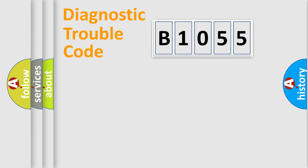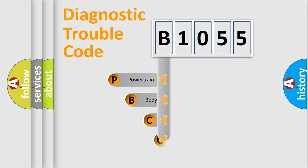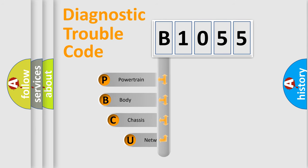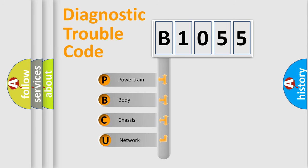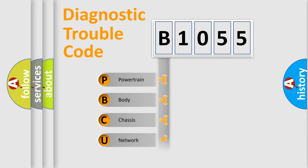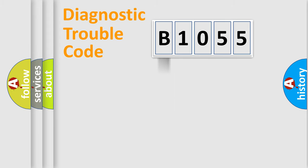Let's do this. First, let's look at the history of diagnostic fault code composition according to the OBD2 protocol, which is unified for all automakers since 2000. We divide the electric system of an automobile into four basic units: Powertrain, Body, Chassis, and Network.